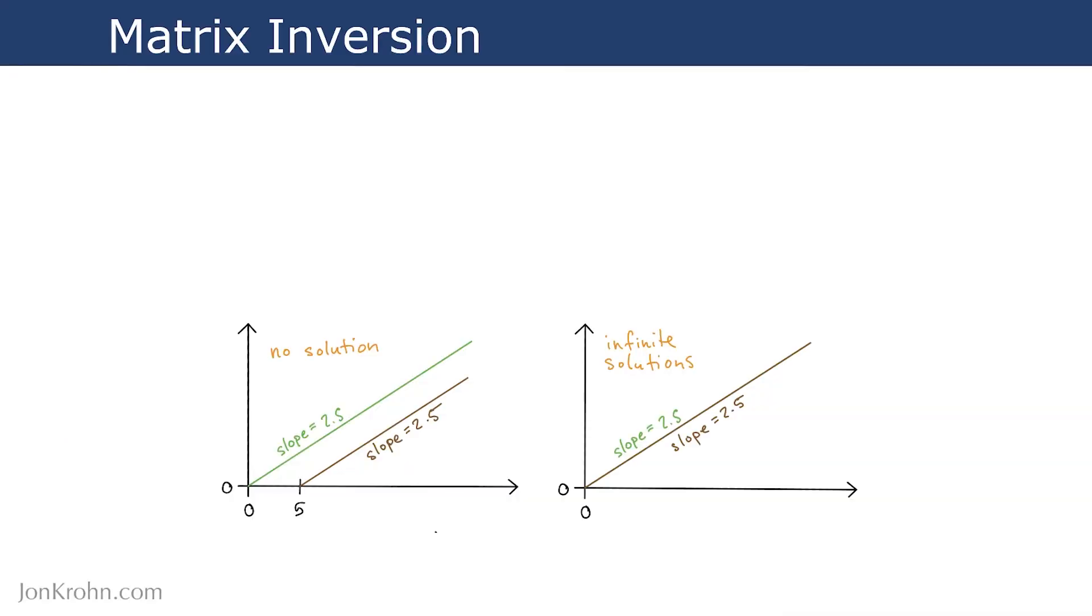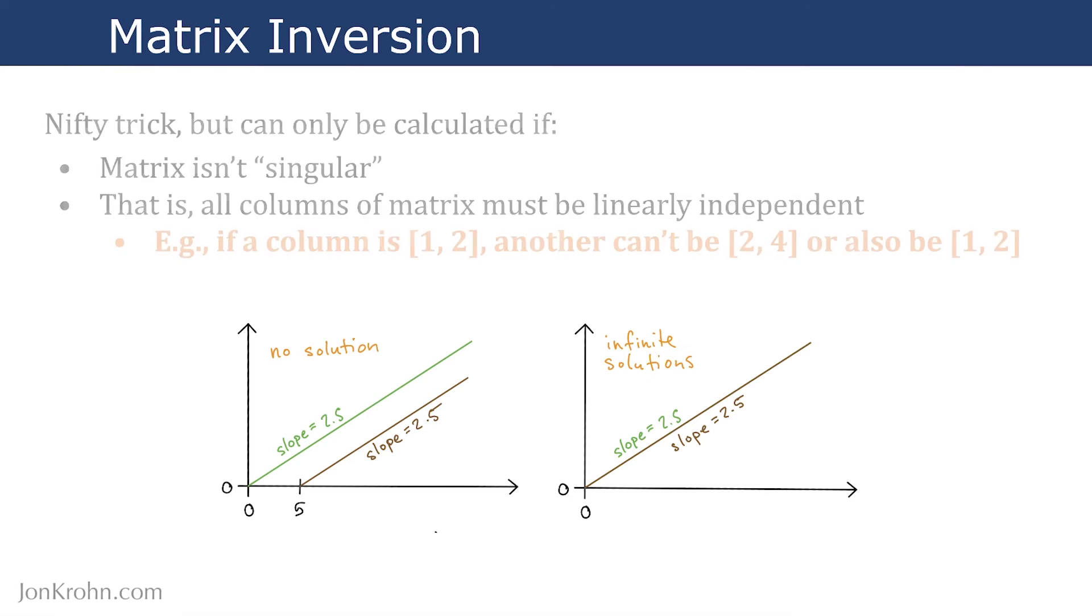Finally, as I mentioned a couple of times earlier on in the video, there are limitations to where we can apply matrix inversion. So while matrix inversion is a nifty trick, it can only be calculated if the matrix that we're trying to invert isn't singular. So that is, all of the columns of the matrix must be linearly independent. We talked about this property in more detail in the first topic of this Machine Learning Foundation series in a video called What Linear Algebra Is.